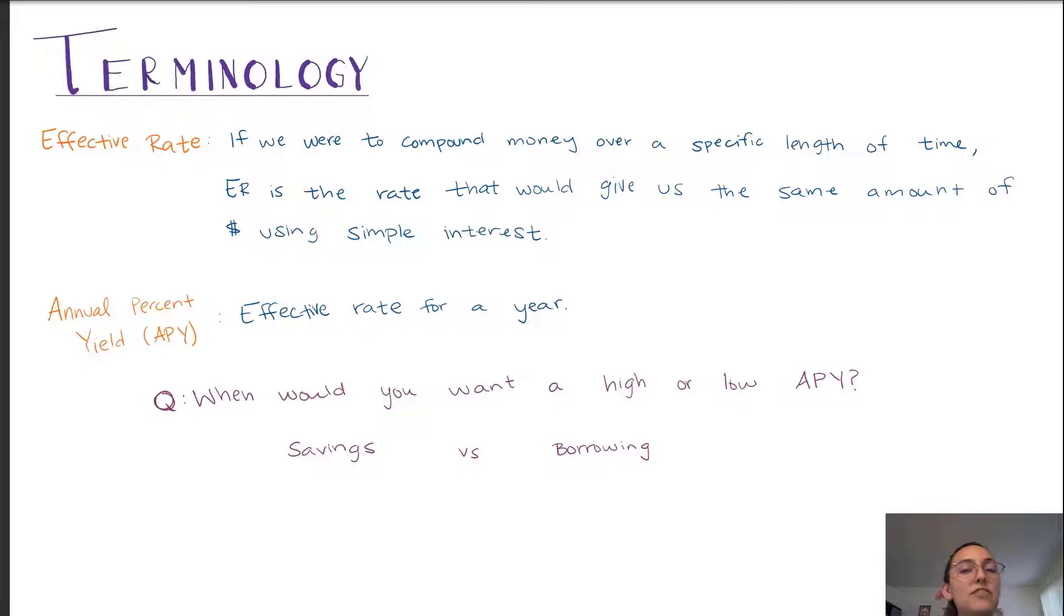So what this means is the effective rate should be higher than the compound interest rate because as we discussed before, compound interest grows faster than simple interest. So we're going to need the effective rate to make up for the slowness of the simple interest method.